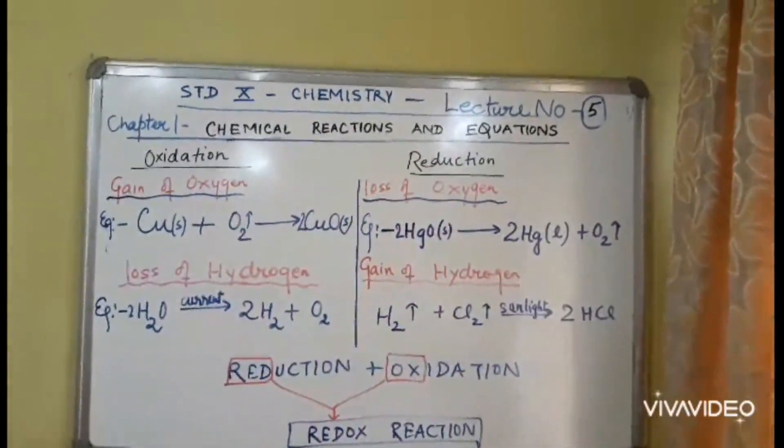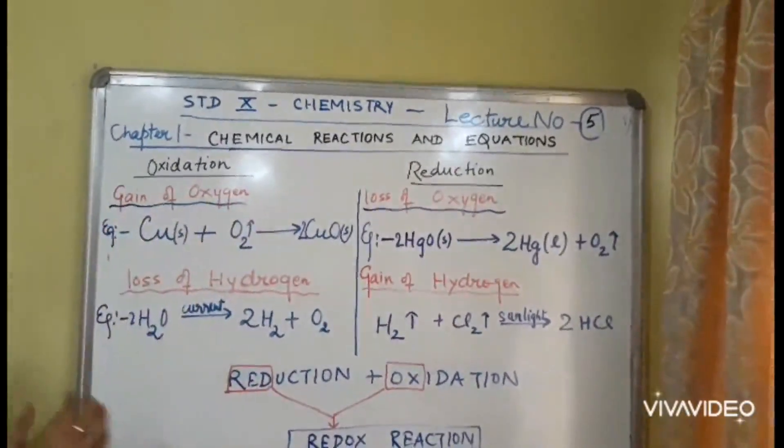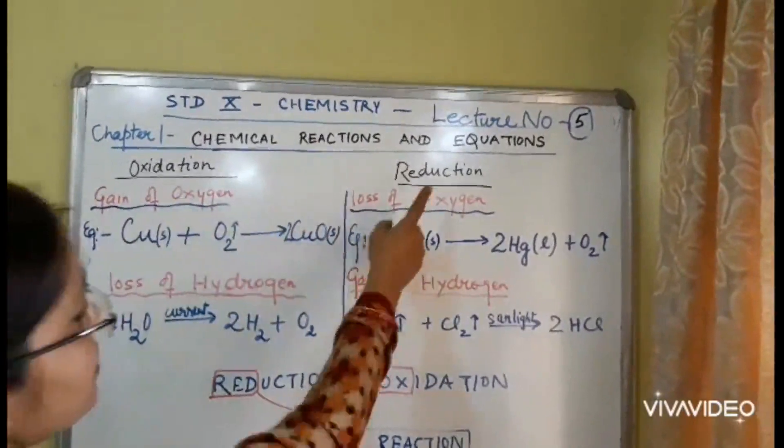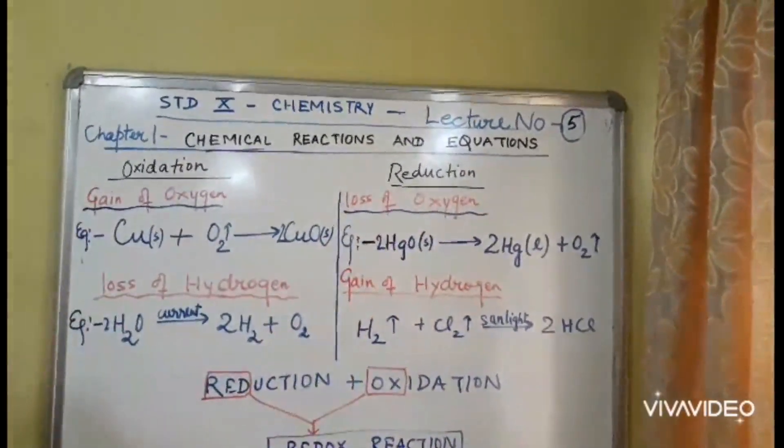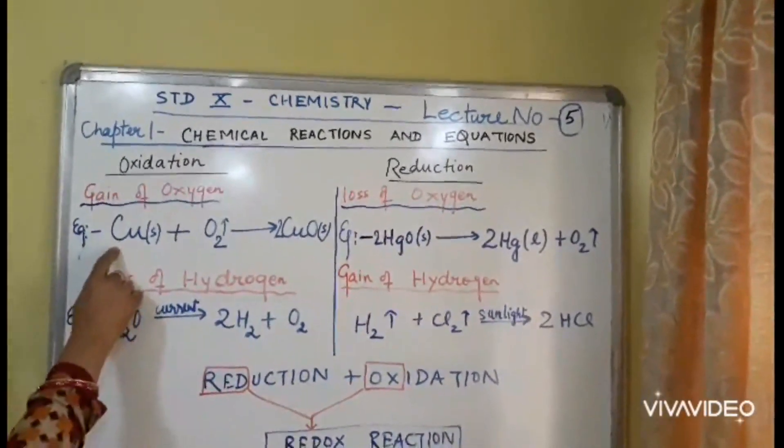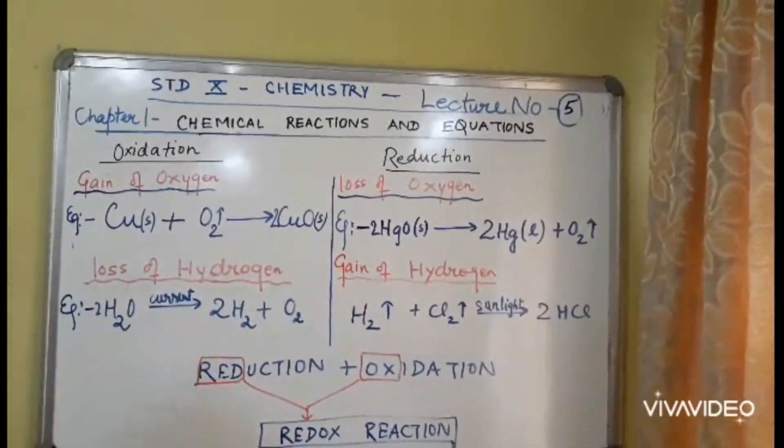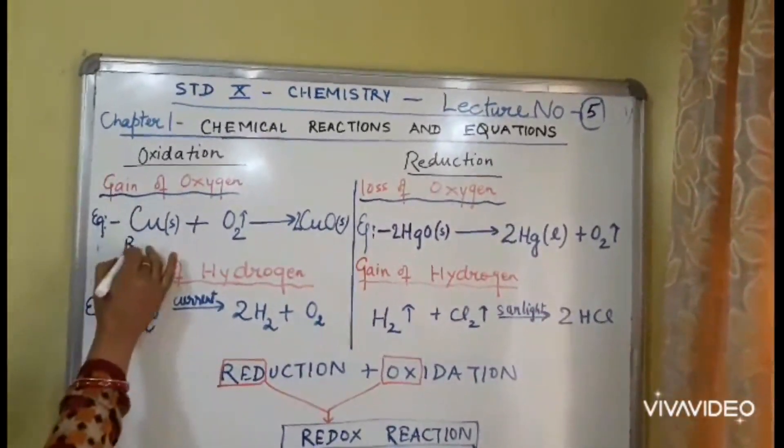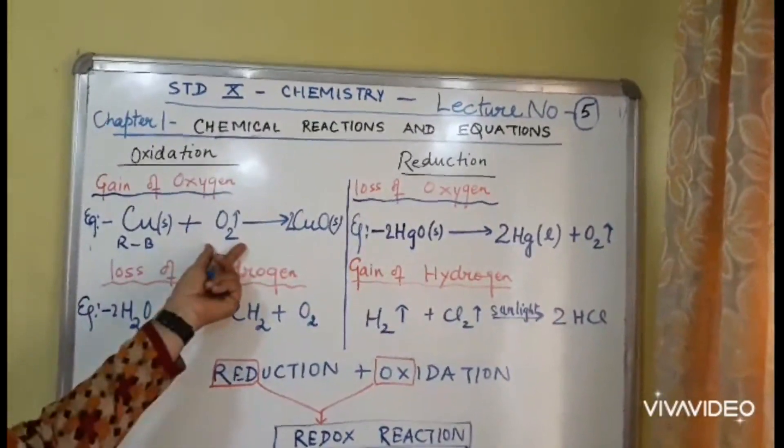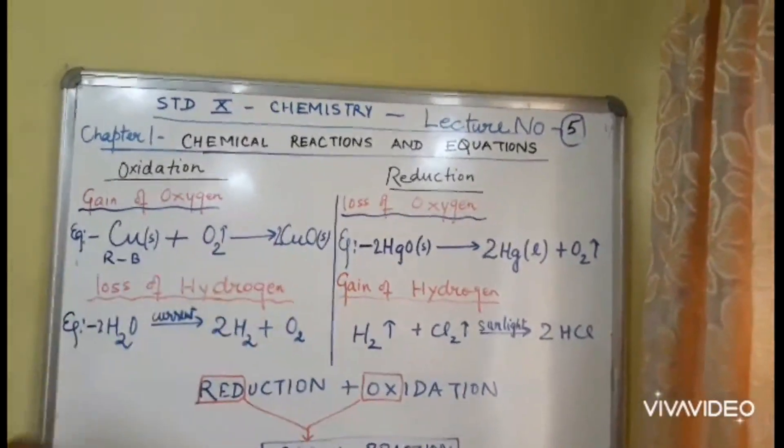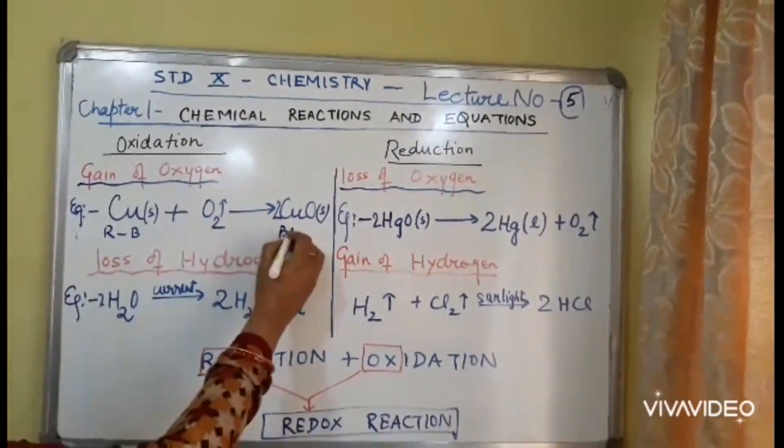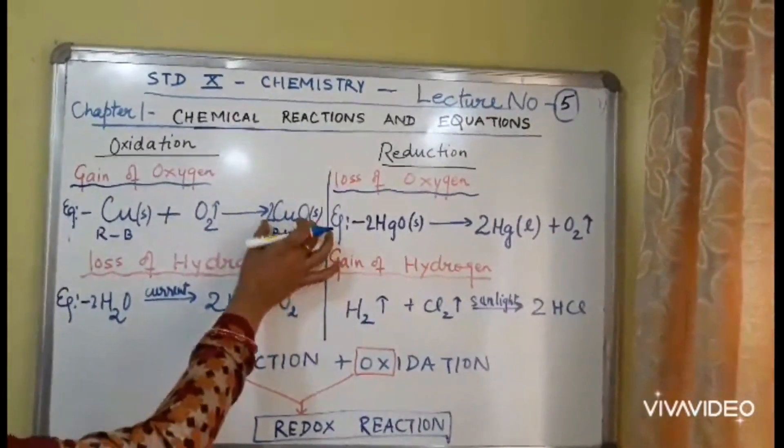Now oxidation, oxy is gain of oxygen, while reduction is the reverse, it is loss of oxygen. It becomes clear with these examples. Copper, you all know the color of copper is reddish brown. Now this reddish brown copper, when you heat it in presence of oxygen, it shows a black deposition of cupric oxide.